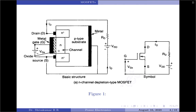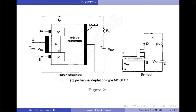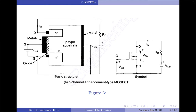On the other hand, if VGS is made positive, the channel becomes wider and IDS increases due to reduction in RDS. For the P channel depletion type MOSFET, the polarities of VDS, IDS, and VGS are simply reversed. For the N channel enhancement type MOSFET, if VGS is positive, an induced voltage will attract electrons from the P substrate and accumulate them at the surface just beneath the oxide layer. If VGS is greater than or equal to the threshold voltage VT, a sufficient number of electrons are accumulated to form a virtual N channel and current flows from drain to source.